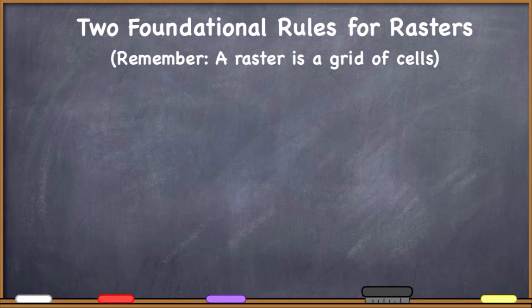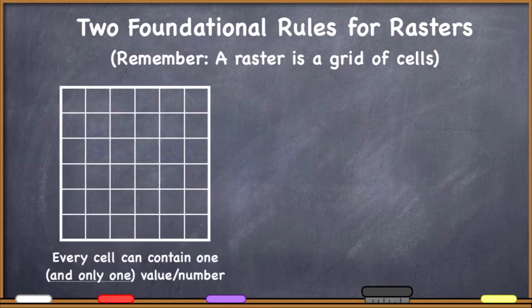Let me give you two foundational rules for rasters. These are pretty simple rules. Rasters are conceptually simple. The vector data model was conceptually simple as well, but the raster data model is very conceptually simple. We have these grids of cells and then we're going to follow these two very simple rules. The first is that every cell can contain one and only one value. We're going to be able to put our number inside each one of these cells, but it's critically important that every cell only gets one. You can't put more than one value per cell.